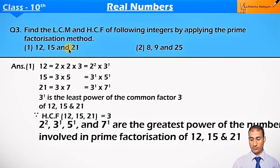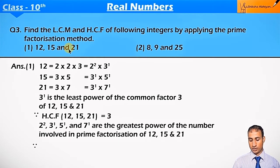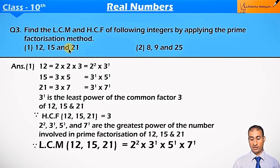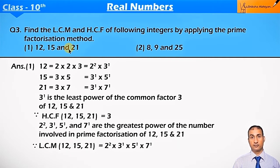Now, 2², 3¹, 5¹, and 7¹ are the greatest powers of the numbers involved in prime factorization of 12, 15, and 21. So LCM of 12, 15, and 21 is 2² × 3¹ × 5¹ × 7¹, that is 4 × 3 × 5 × 7 equal to 420. So LCM and HCF is done.